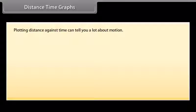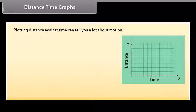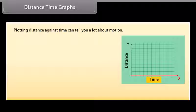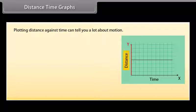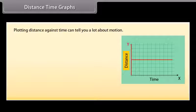Distance-time graphs: plotting distance against time can tell you a lot about motion. Time is always plotted on the x-axis — the further to the right on the axis, the longer the time from the start. Distance is plotted on the y-axis — the higher the graph, the further from the start.